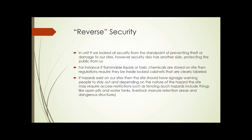If we have hazards on our sites, the site should have signage warning people to stay out. And depending on the nature of the hazard, the site may require access restrictions such as fencing. The types of hazards include open pits, open water tanks, livestock manure retention areas, dangerous structures, and that sort of thing. That's the flip side to the security we looked at previously.